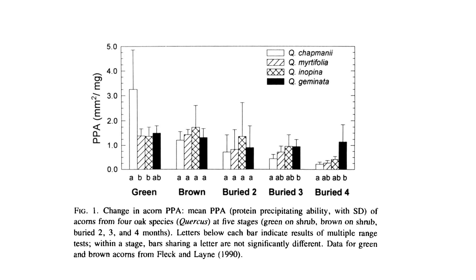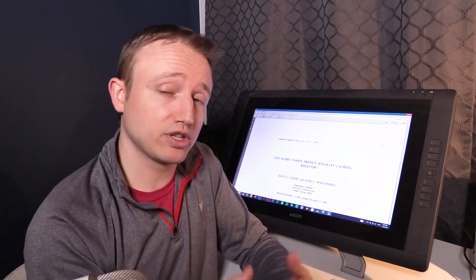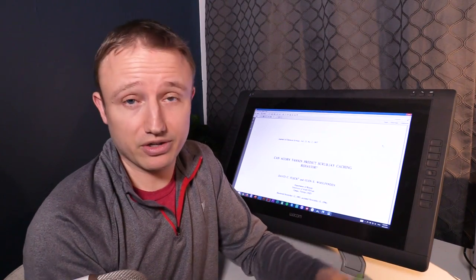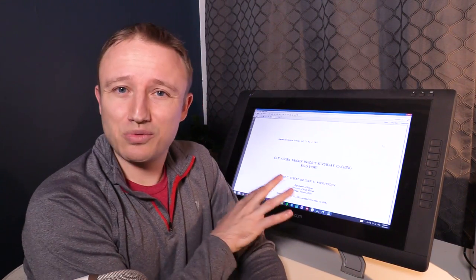The other reason they cache high-tannin seeds is that this study found tannins decrease over time when buried. We think rainwater seeps into the seeds and pulls out the tannins, since tannins are water soluble. Many human cultures that ate acorns dealt with tannins by soaking acorns in water and changing the water frequently — doing this a couple of times removes the tannins. And it looks like squirrels are doing essentially the same thing by caching them underground.